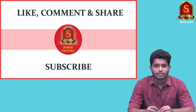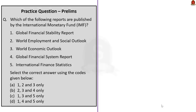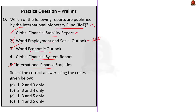Now let's get into our first question discussion. Each of the following reports are published by the International Monetary Fund (IMF): First, Global Financial Stability Report. Second, World Employment and Social Outlook. Third, World Economic Outlook. Fourth, Global Financial System Report. Fifth, International Finance Statistics. The Global Financial Stability Report, World Economic Outlook, and International Finance Statistics are published by the IMF. The World Employment and Social Outlook is published by the International Labour Organization, and Global Financial System Report is published by the Bank for International Settlements (BIS). So the correct answer is option C, 1, 3 and 5 only.